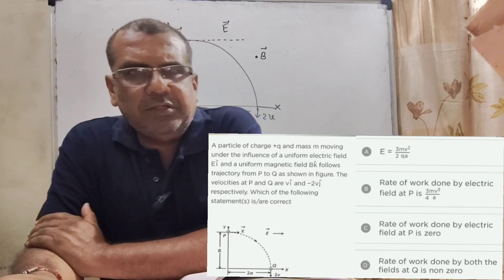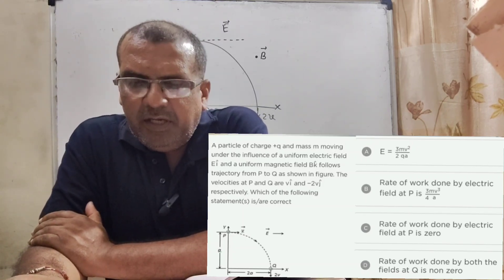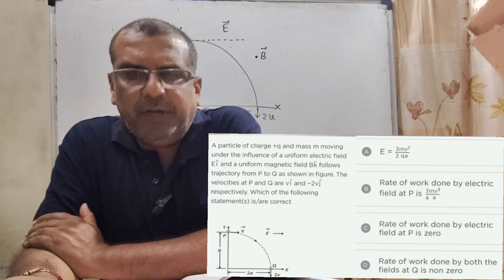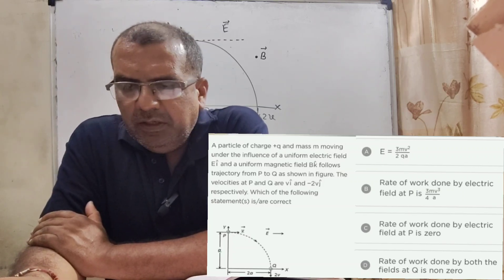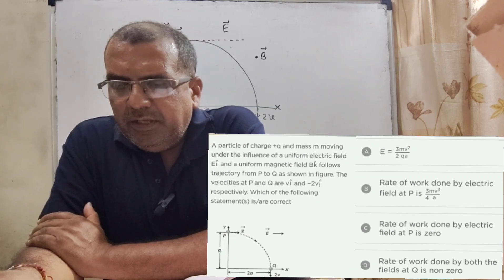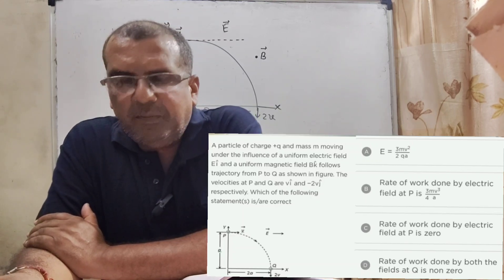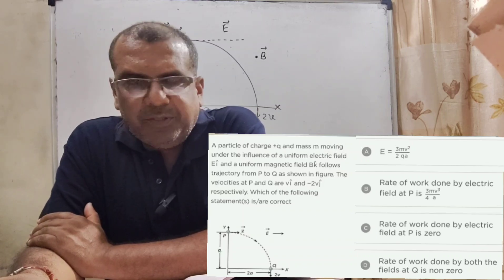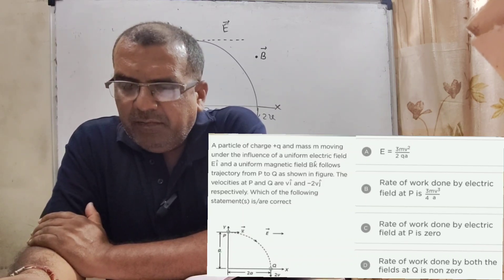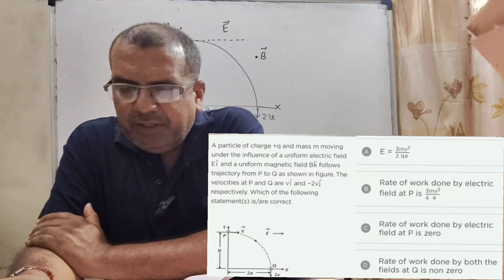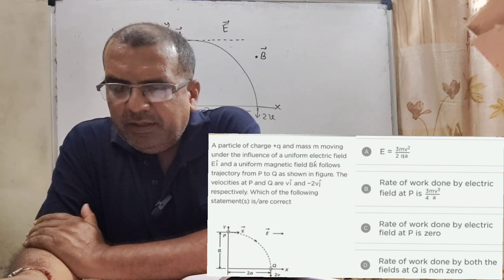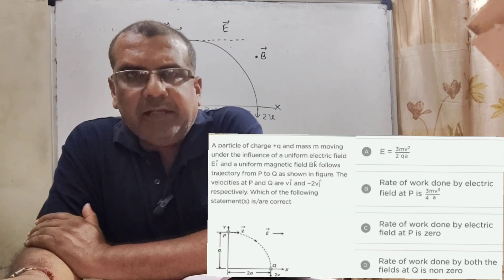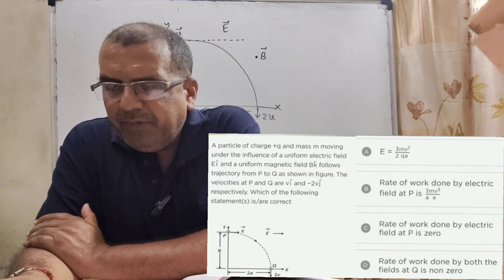The velocities at P and Q are V i unit vector and 2V j unit vector. Which of the following statements is or are correct? It means multiple choice question. Here, option A is given: E equals 3 by 4 into M V square over Q into A. Option B: rate of work done by the electric field at P is 3 by 4 M V cube by A. Option C: rate of work done by electric field at P is zero. And option D: rate of work done by both the fields at Q is zero. This question is asked in IIT 1991.